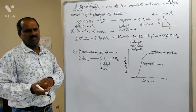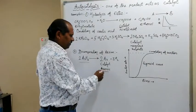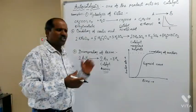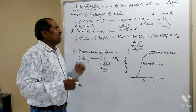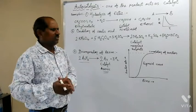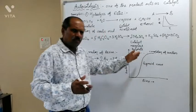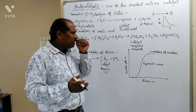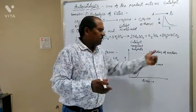The third example is the decomposition of arsine (AsH3). On the decomposition of arsine, free arsenic is formed. This free arsenic itself starts to play the role of catalyst in this reaction and the rate of reaction starts to increase steadily. So in autocatalysis, the rate of reaction increases due to the formation of one of the products which acts as a catalyst. In the beginning the rate is slow, but as the product catalyst forms, the rate steadily increases as shown in the diagram.